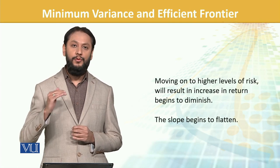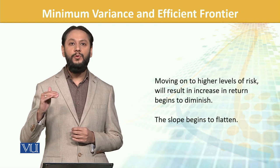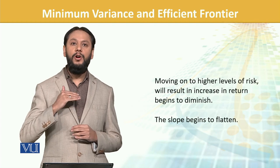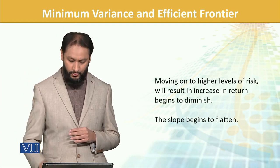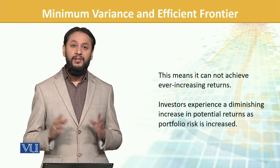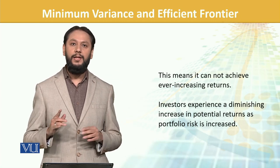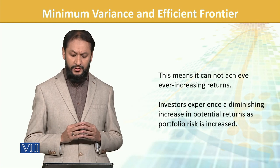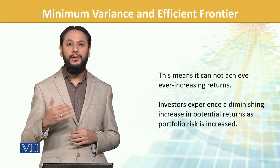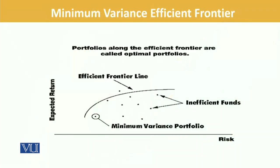When you keep taking on more risk, returns do increase initially, but only up to a certain level. After that, the curve flattens out because returns cannot increase infinitely — a diminishing factor sets in. This means the investor should not take on excessive risk. The portfolio return increases at first but then levels off. Portfolios that fall below the efficient frontier line are considered inefficient, while those on the line are optimal, efficient portfolios.